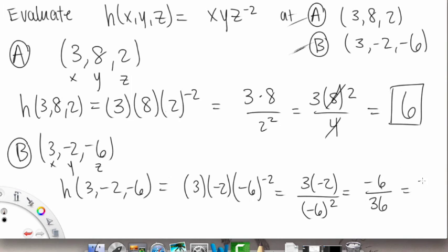So this is equal to negative 1 over 6. So that's the value of the 3 variable function at 3, negative 2, negative 6.